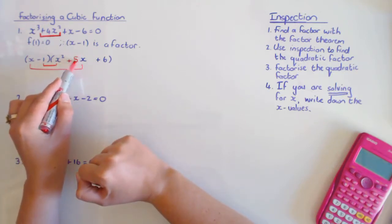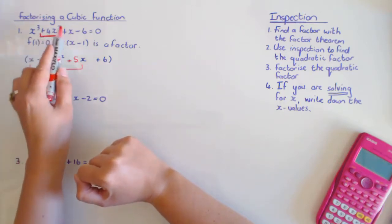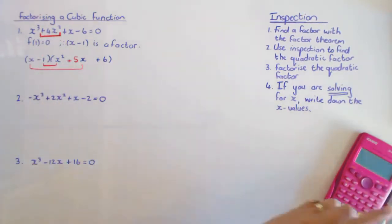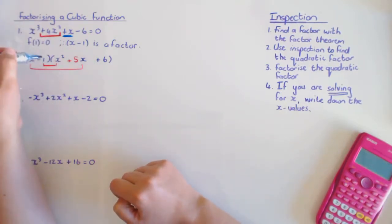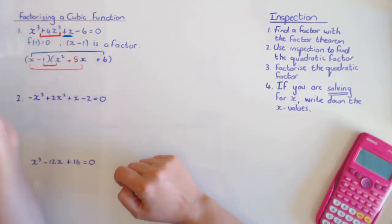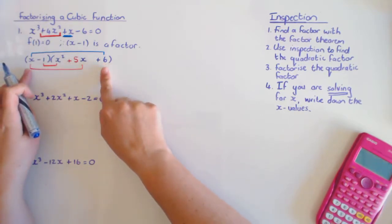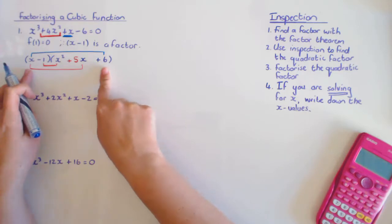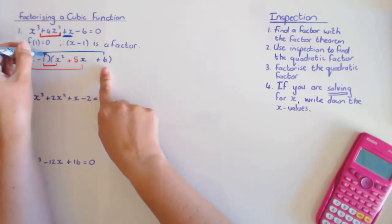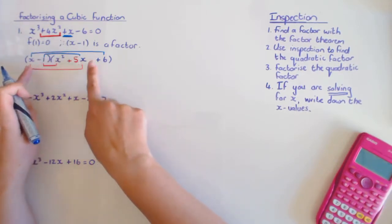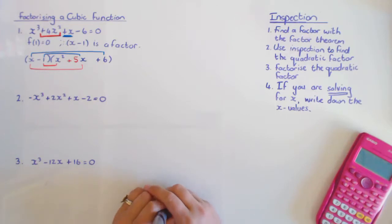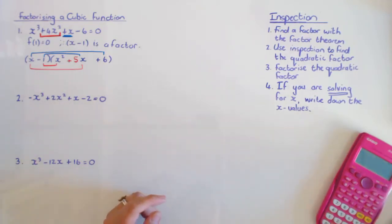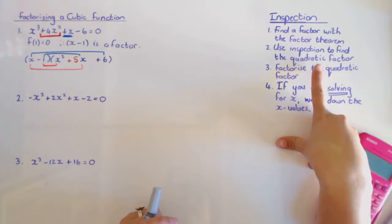Plus five x squared gives me that four x squared, and I can double check using the x terms: x times six gives plus six x, and minus one times five x gives minus five x. Plus six x minus five x gives me the one x term I need. So this is the method of inspection. After using inspection to find the quadratic factor, you must remember to factorize the second bracket.